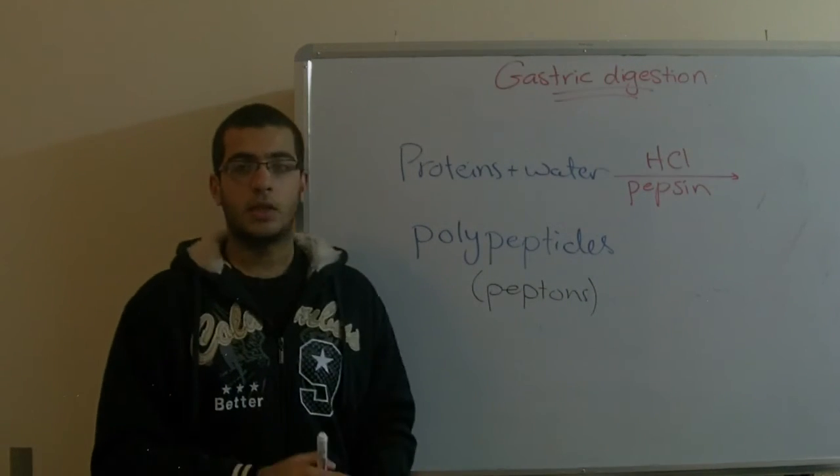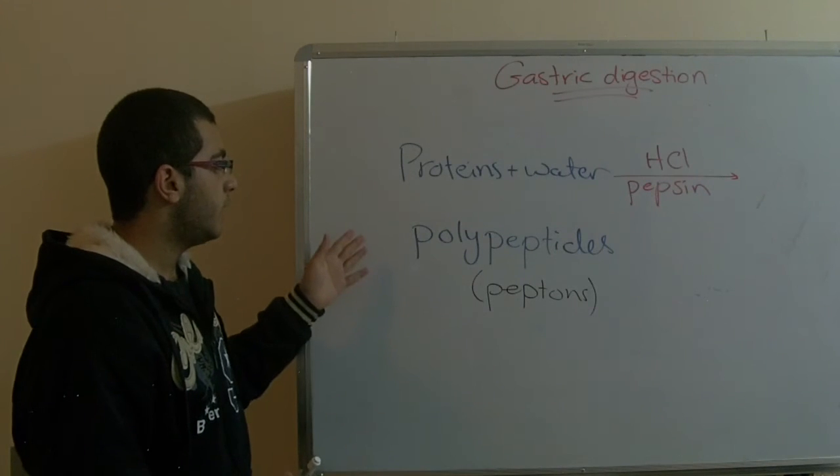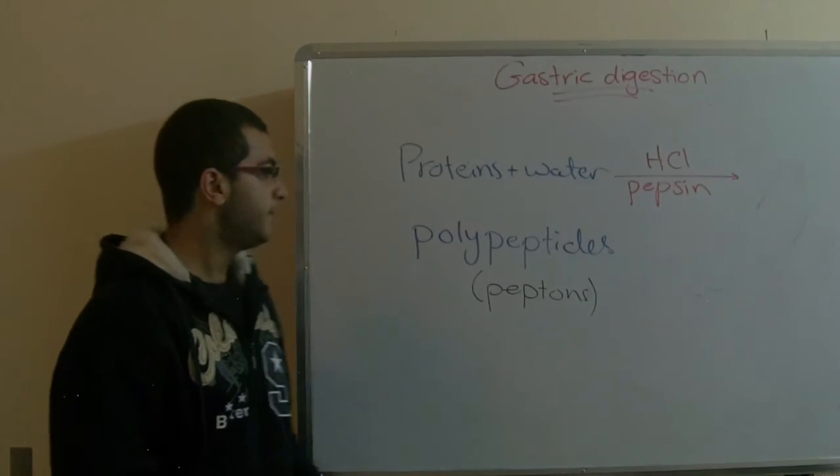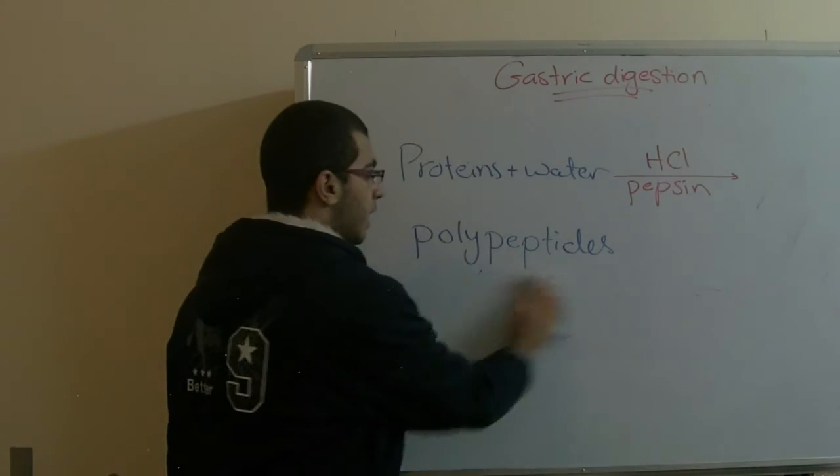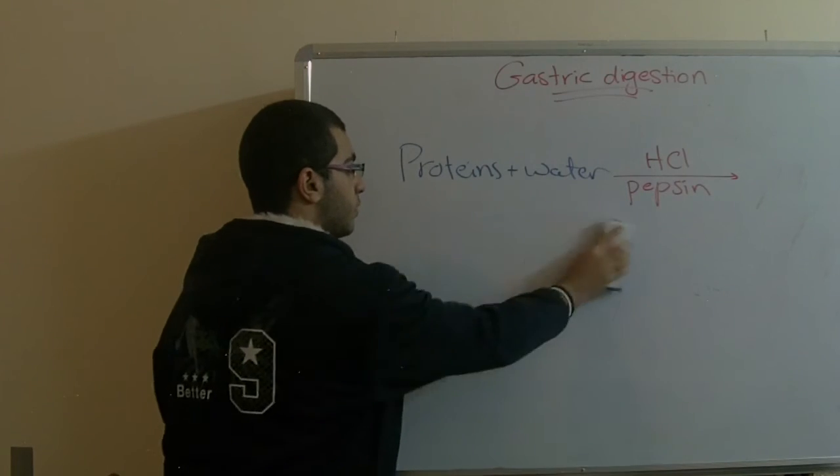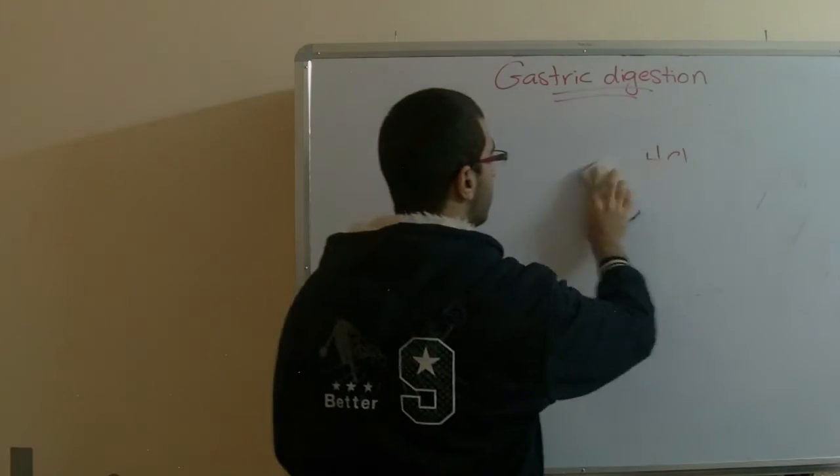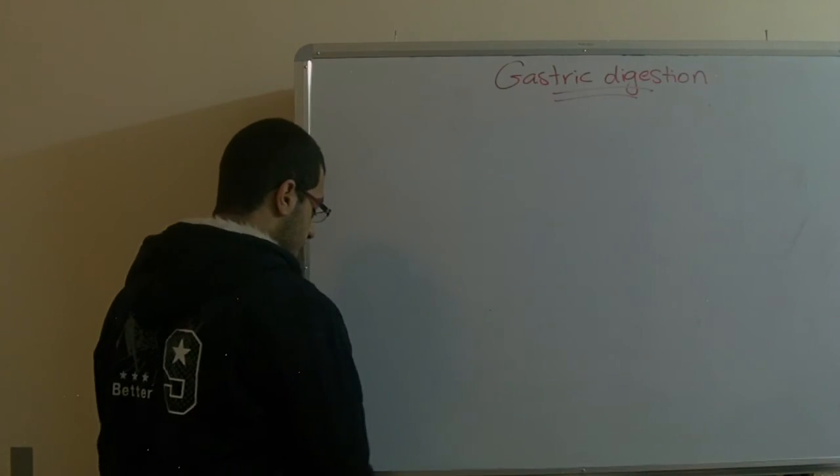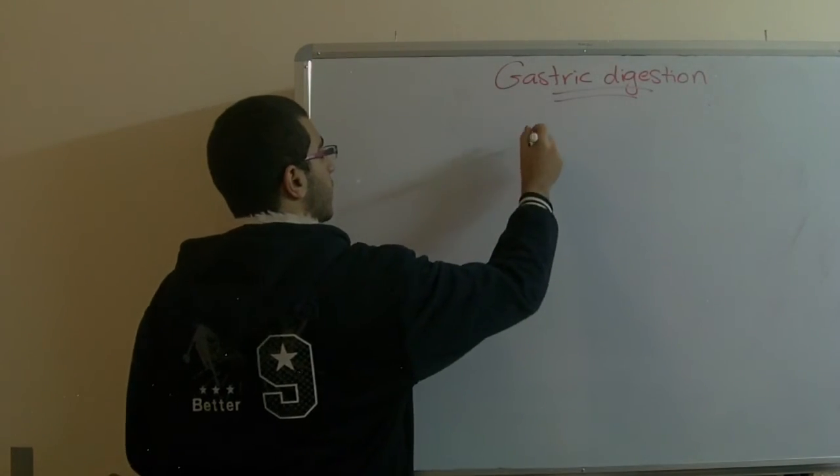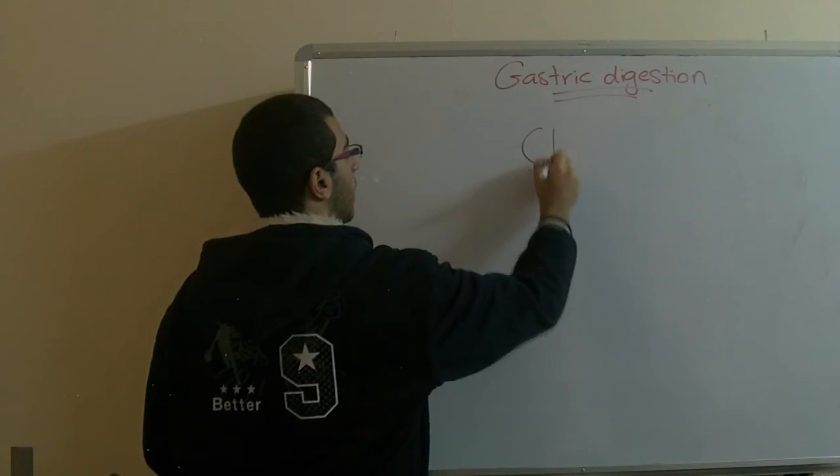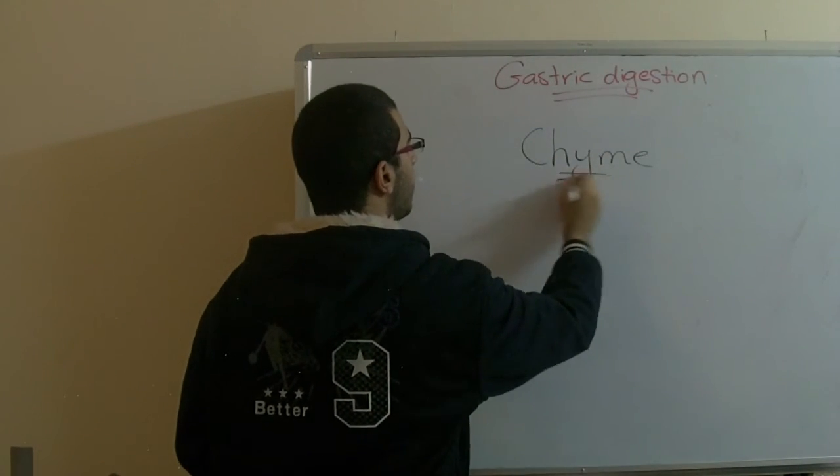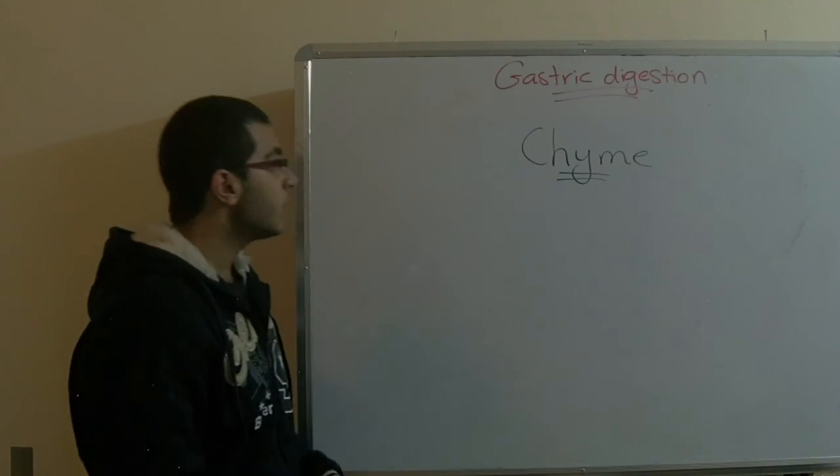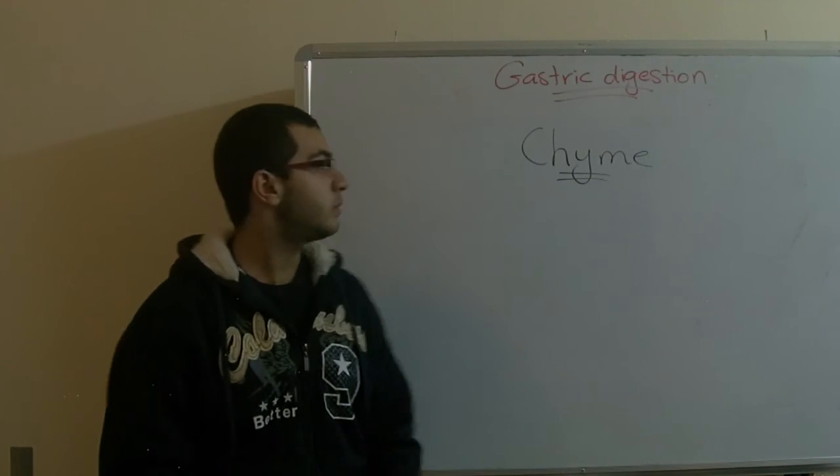So after this process is done, the process of breaking down the proteins into polypeptides by means of the pepsin enzyme and by means of the gastric contractions and relaxation, the food can be partially digested and it's transformed into a substance called the chyme. And the chyme is a semi-fluid substance.